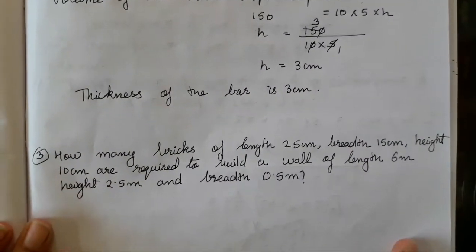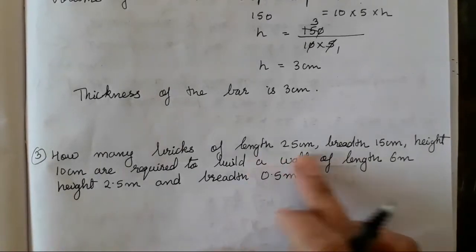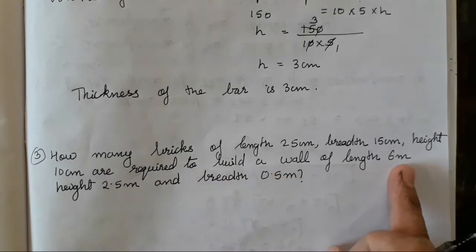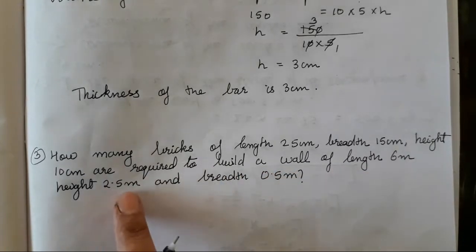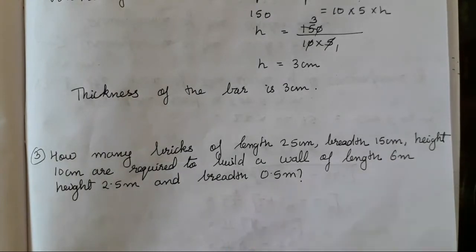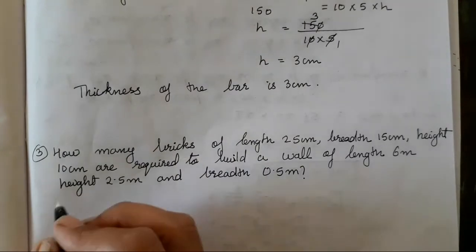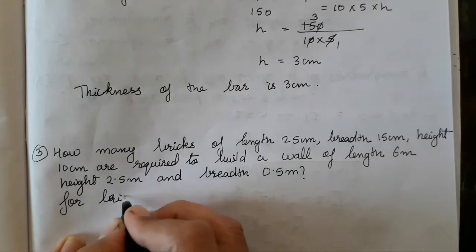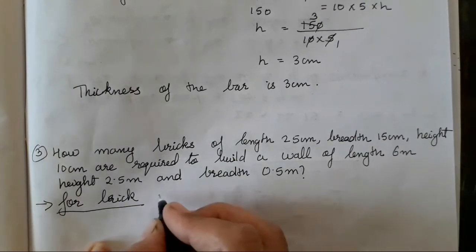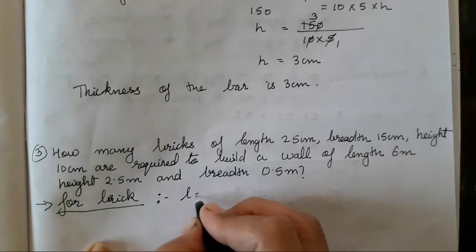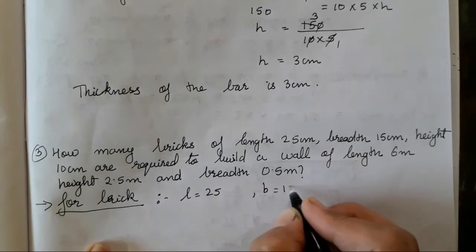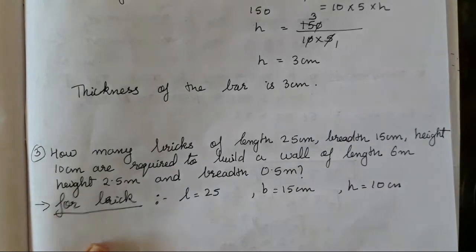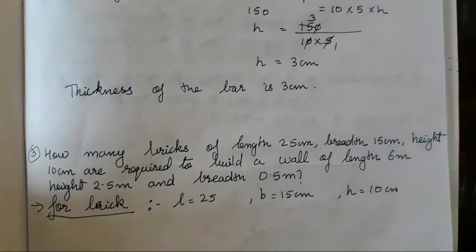Now the third question. How many bricks of length 25, breadth 15, height 10 cm are required to build a wall of length 6 meters, height 2.5 meters and breadth 0.5 meters? First we will find the volume of the brick. L is 25, B is 15, H is 10 cm.